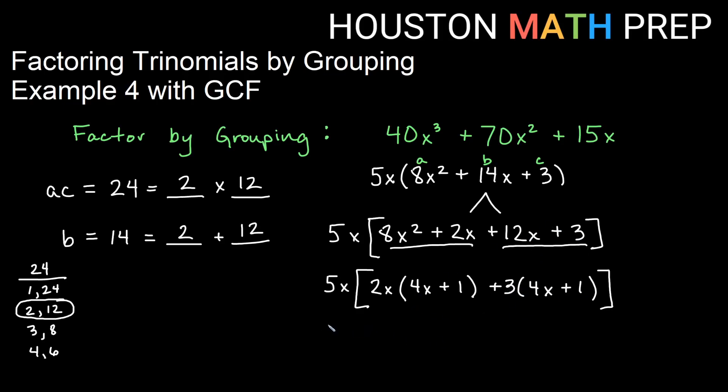Now we'll write our answer. Remember that 5x was, of course, one of our factors. We also have 4x plus 1, we can see is a factor. And then our last thing on the outside here, 2x plus 3. That will be our final factor there. So we get three factors with this one.